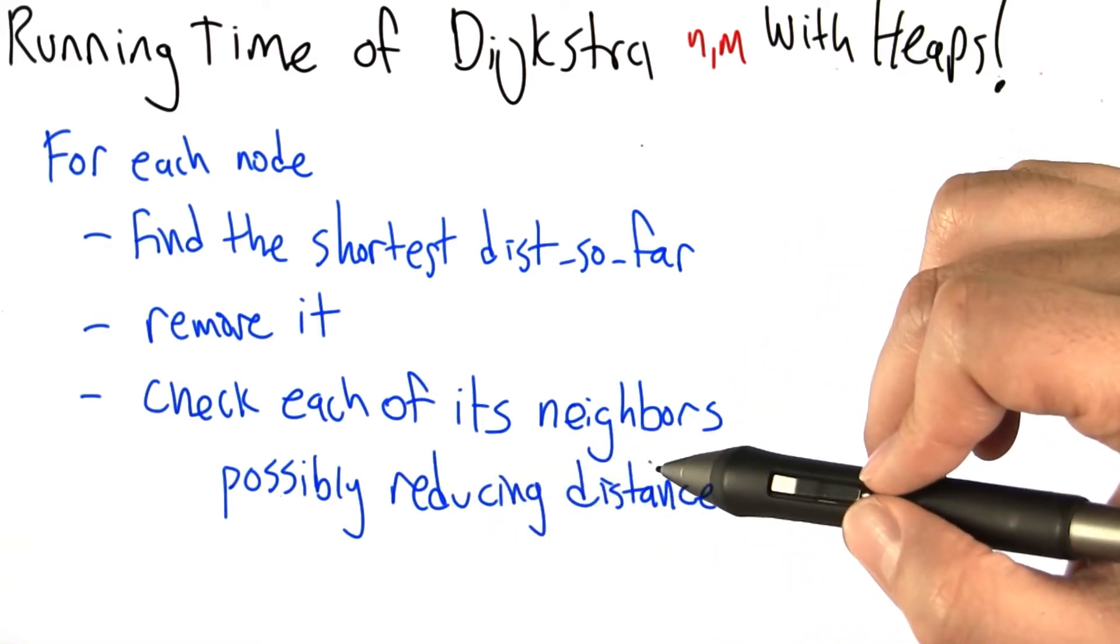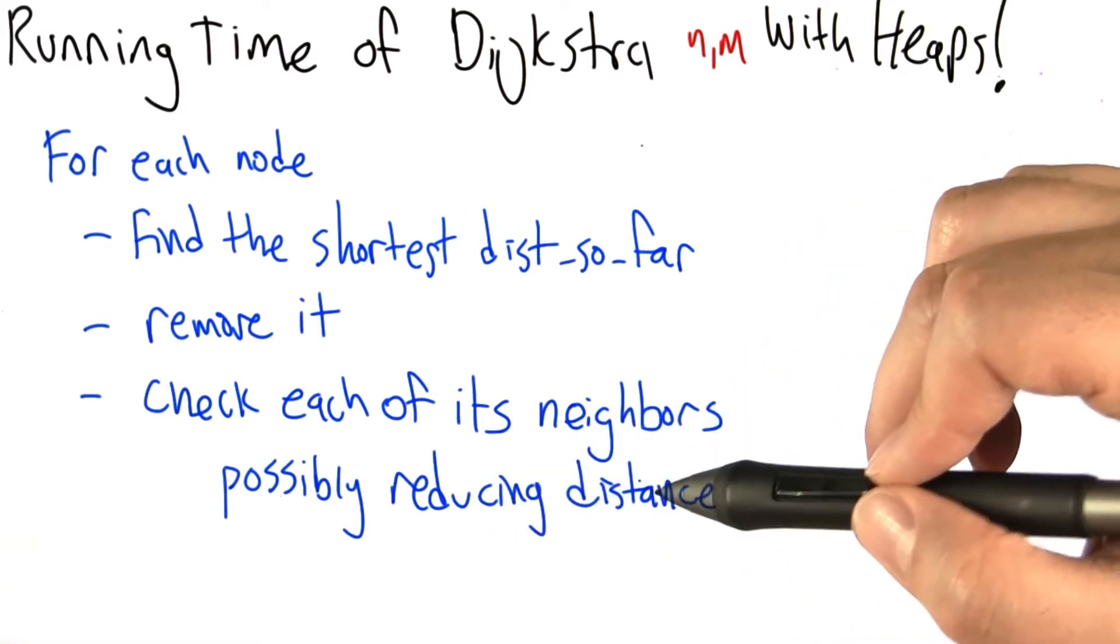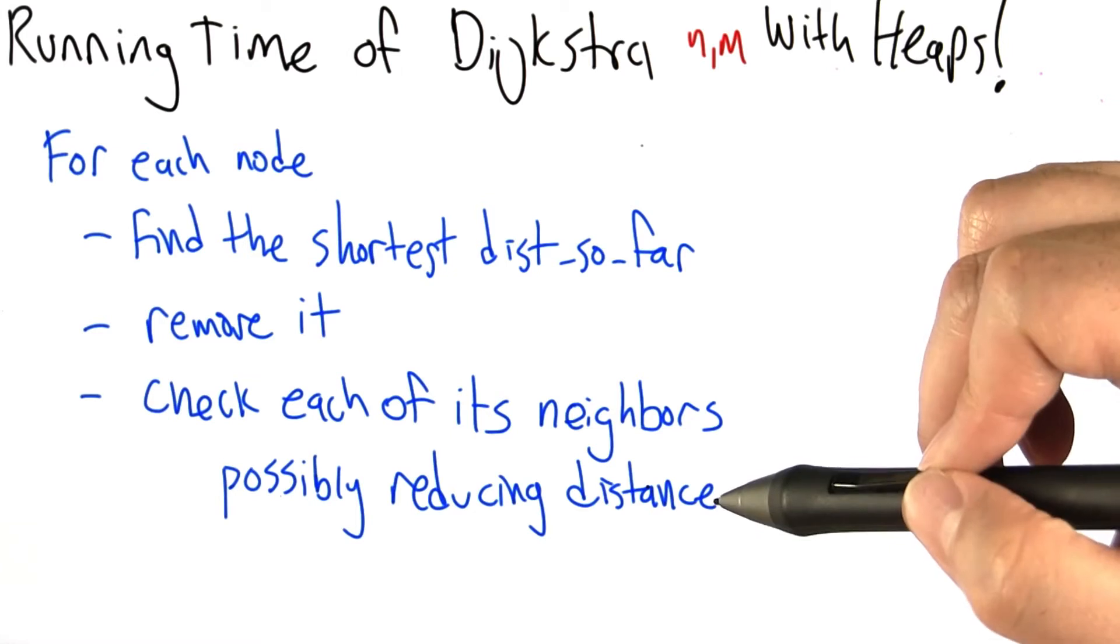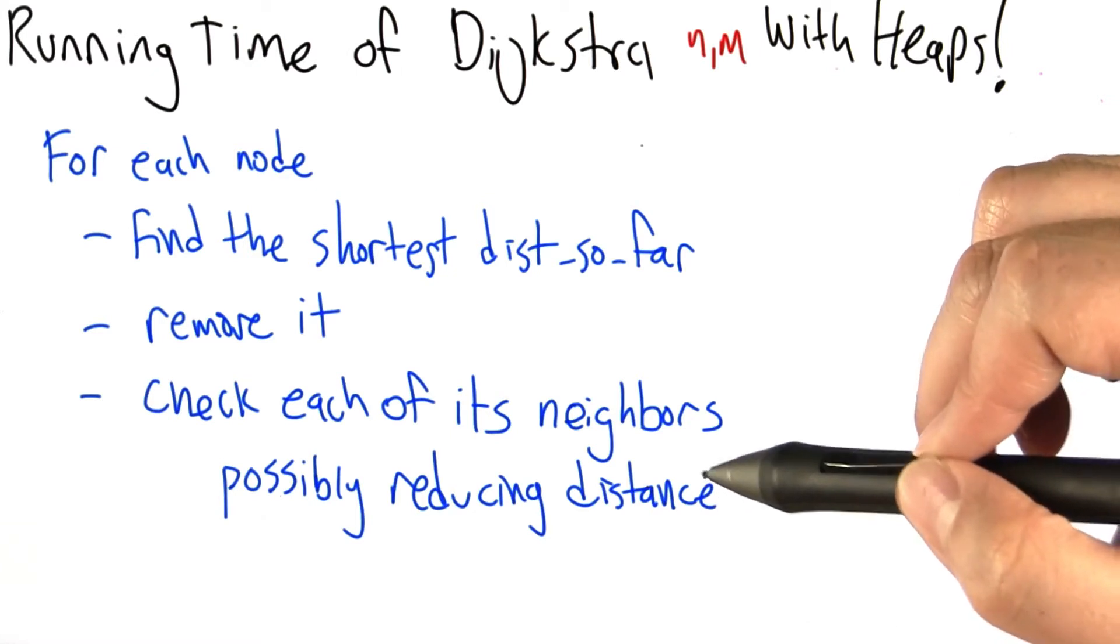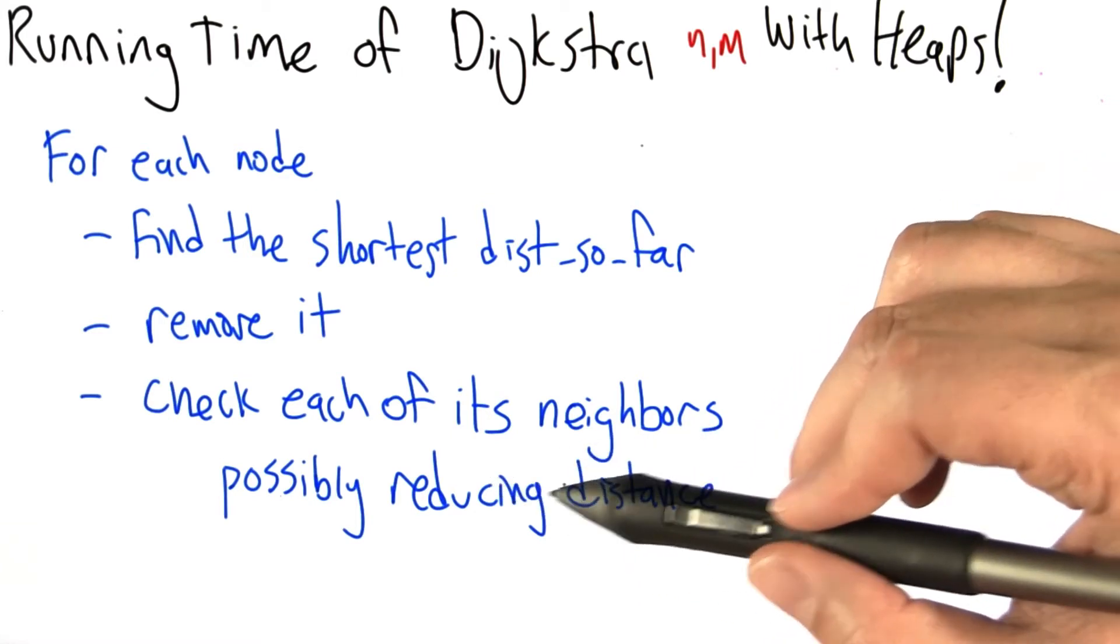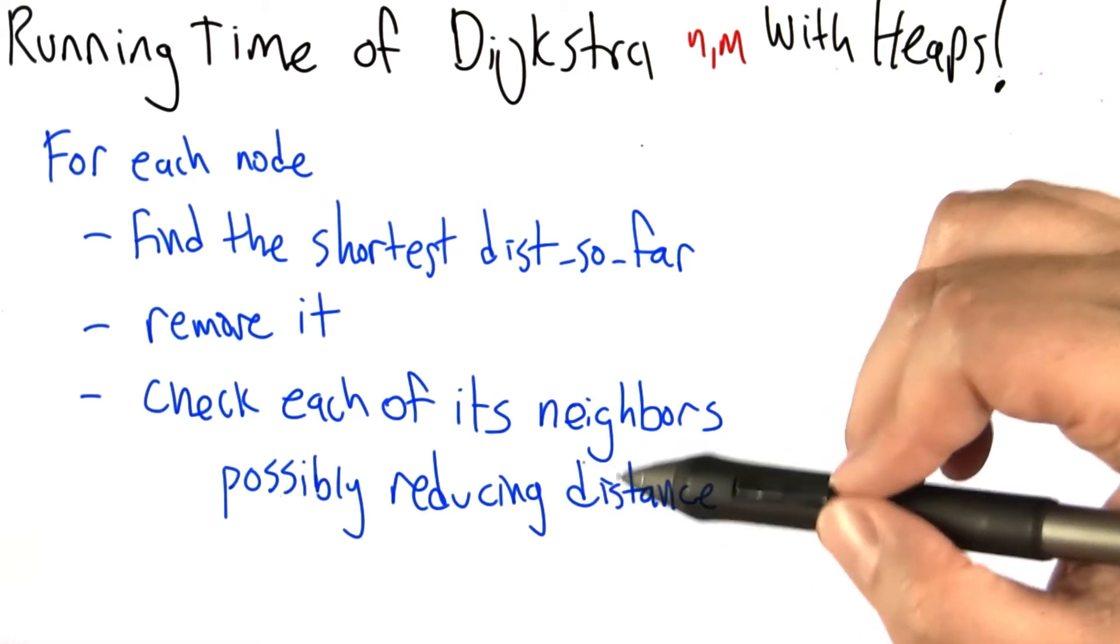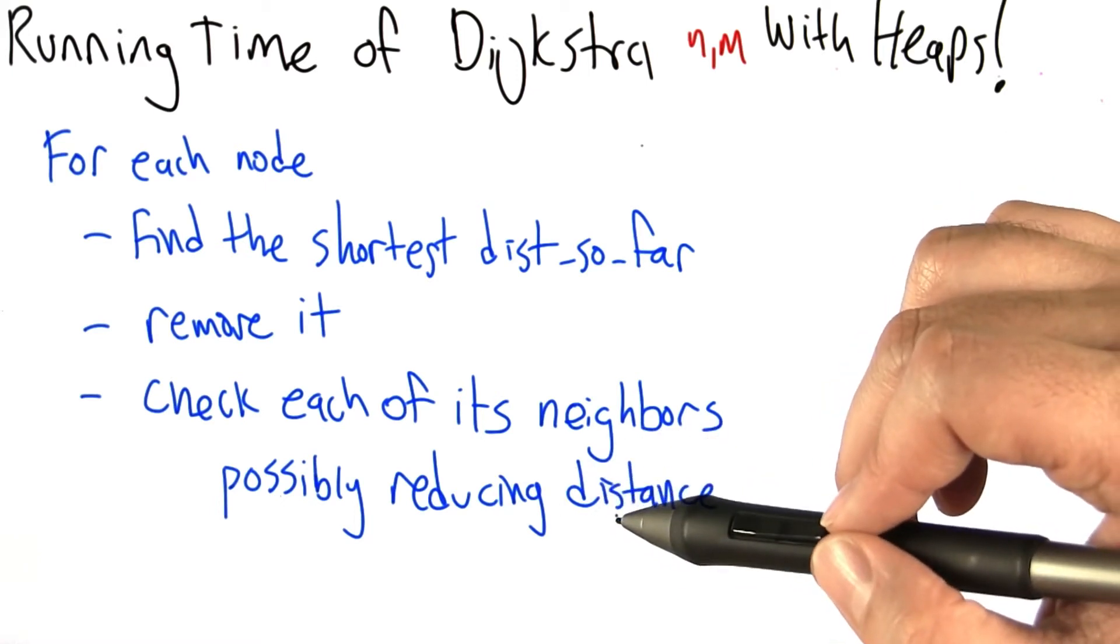Then we check each of its neighbors, possibly reducing the distance, which wasn't a really big deal before, but it actually matters in the heap implementation because once we've reduced the value associated with the node, it needs to maybe be someplace different in the heap.